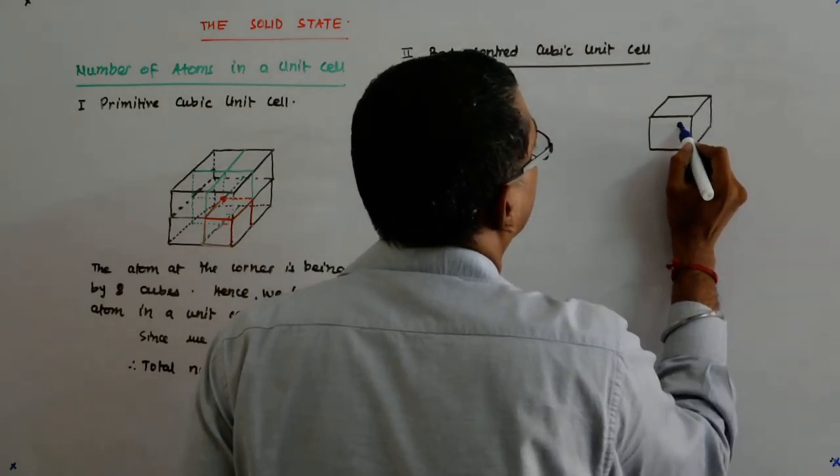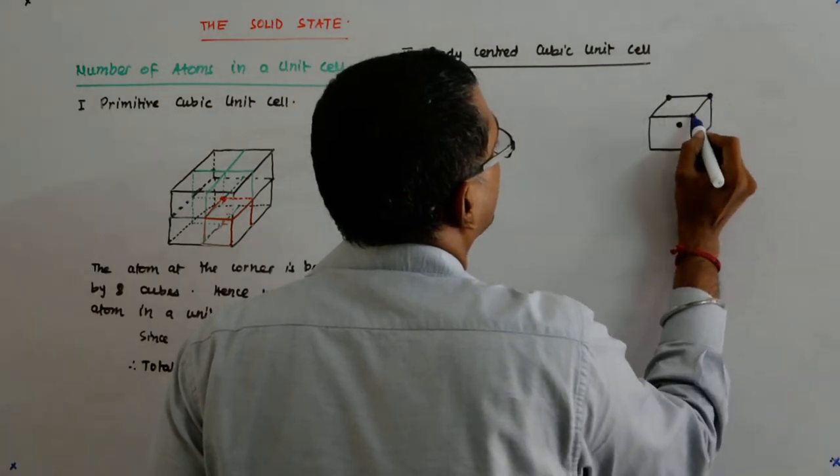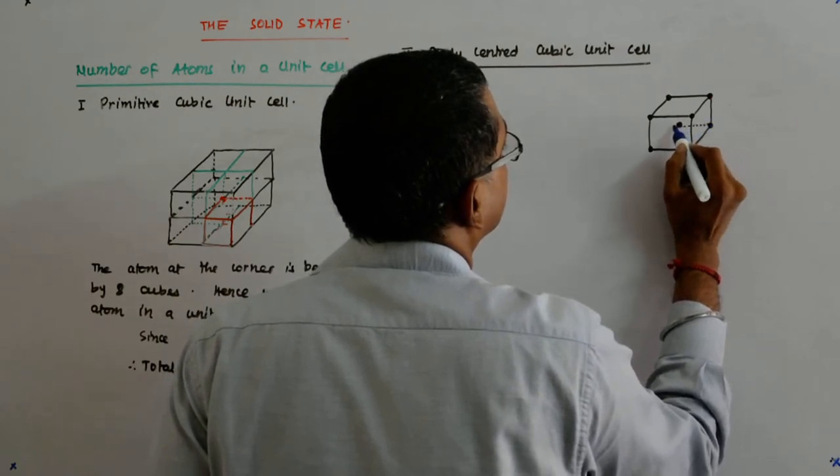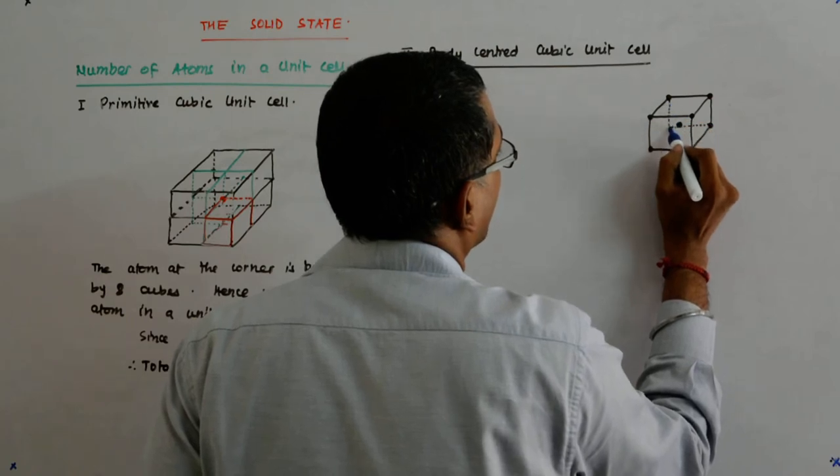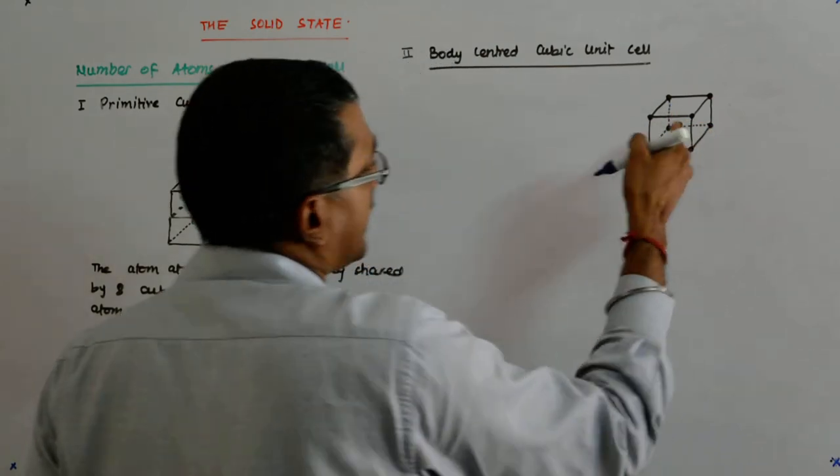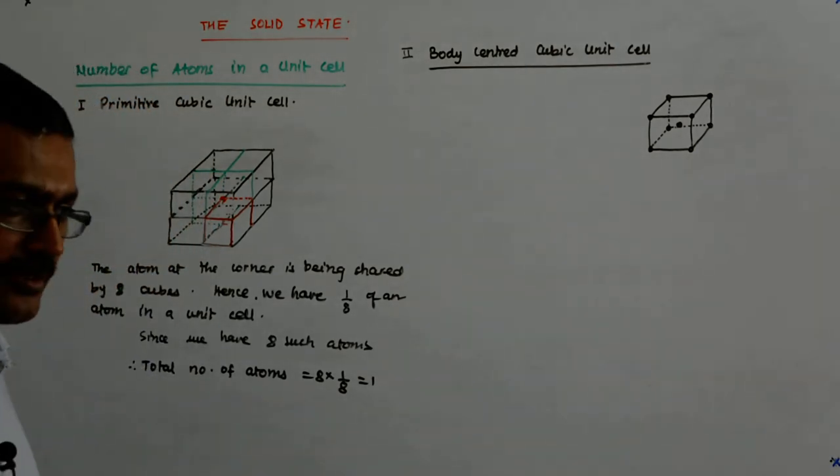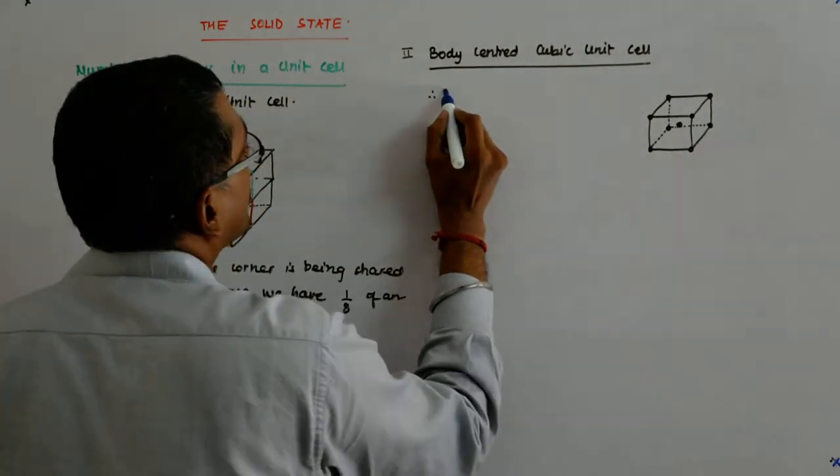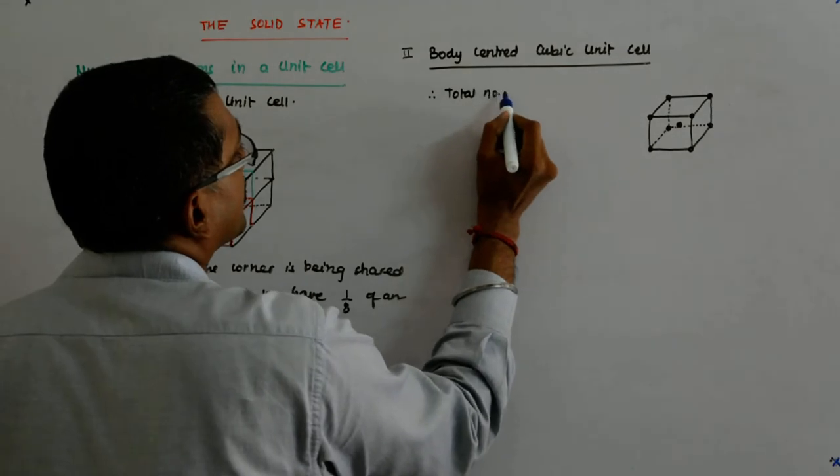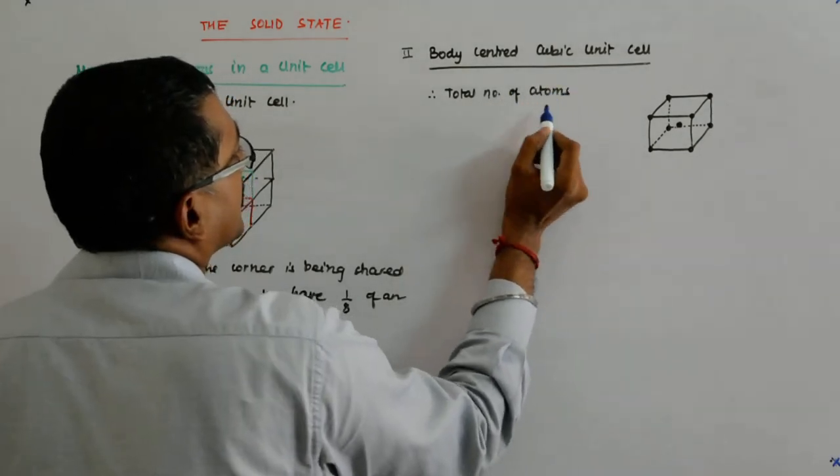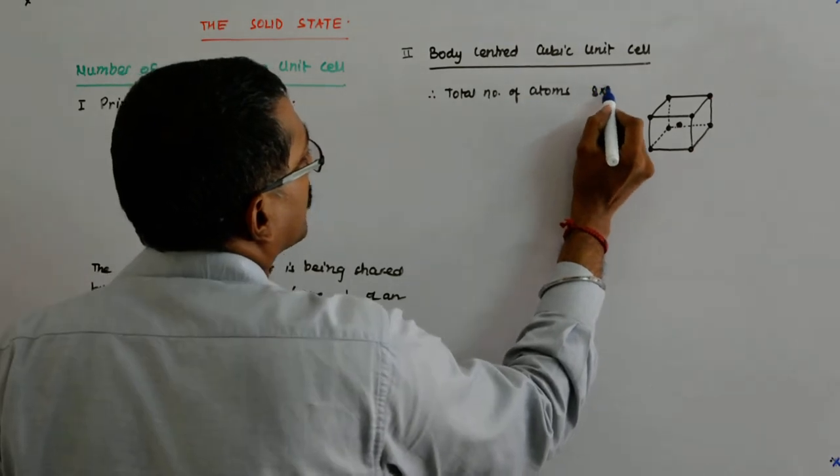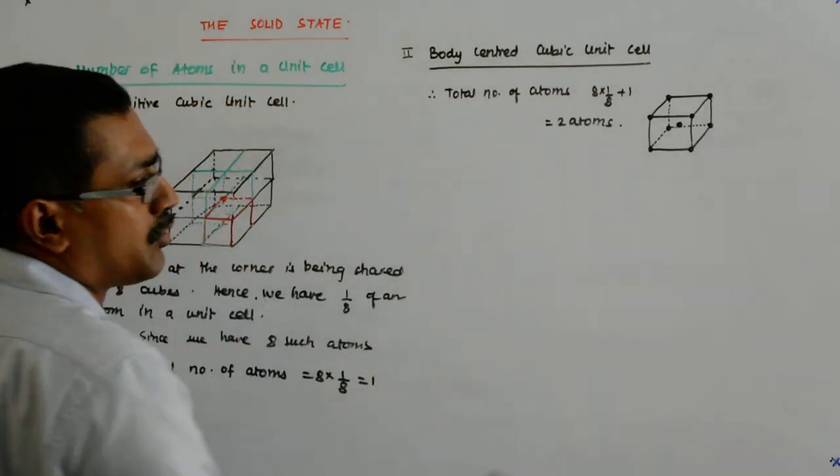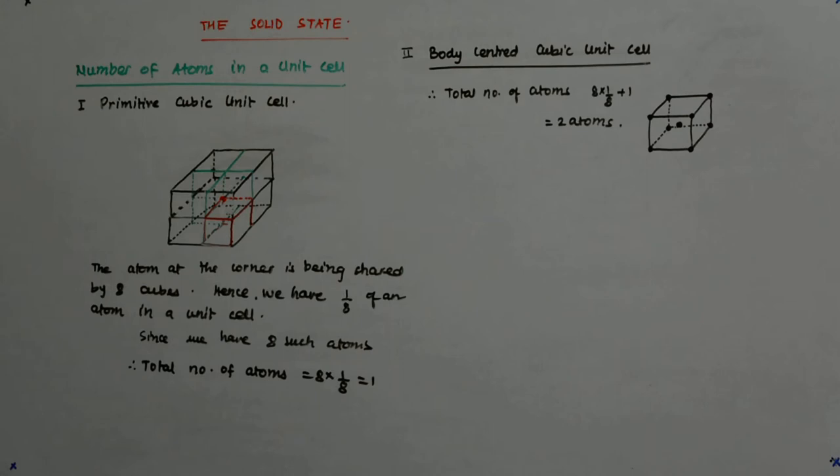With an atom in the center, okay? So, 1, 2, 3, 4, 5, 6, 7, and this is the 8th. And there is another one in the center. So, that belongs fully to this unit cell. Therefore, total number of atoms is 1/8 of 8. So, 8 into 1 upon 8 plus 1. So that gives me 2 atoms, 2 atoms in a body-centered cubic cell.